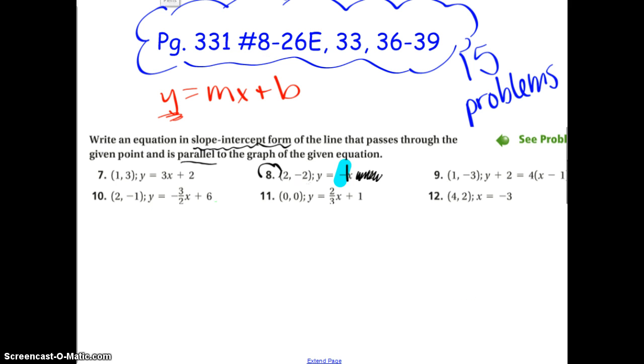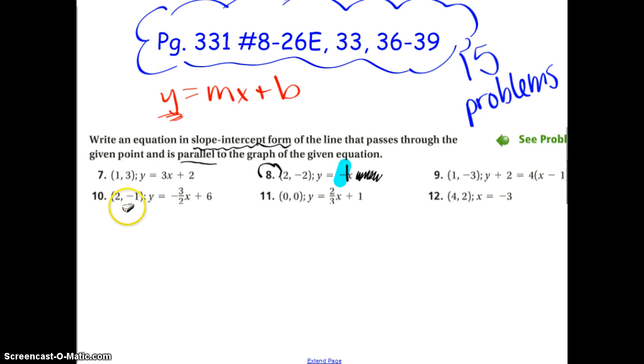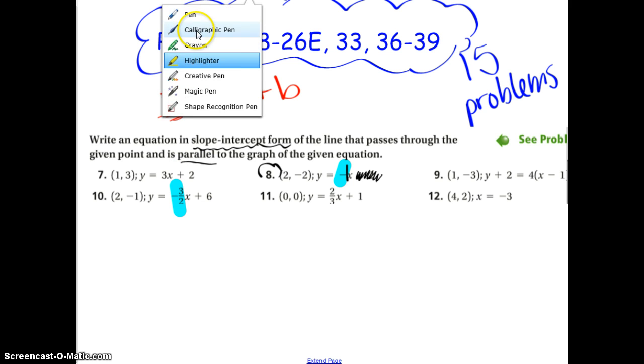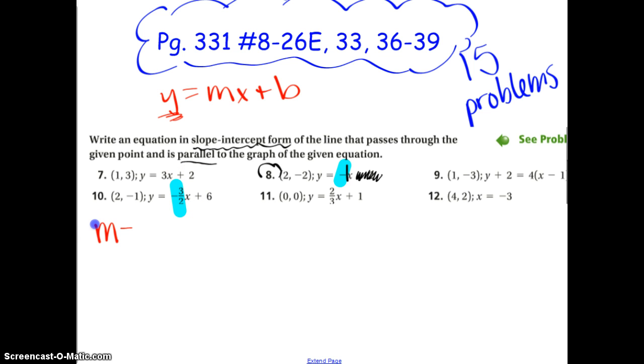Let's try another one. Alright, number 10 says 2, negative 1. And my equation is y equals negative 3 halves plus 6. Do I care about that plus 6 at all? I don't. I just need to know this right here, my slope. So I'm going parallel again. What does that mean about my slope? Yeah, it means it's the same. So m equals negative 3 halves. And I don't care about this plus 6 because I'm writing a new line. This just tells me the old line, but it's not useful information. My point that they gave me is 2, negative 1. So now I look through. I've got a point. I've got a slope. So I plug it into point-slope form.